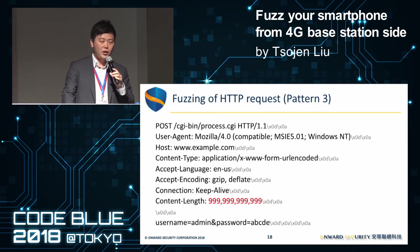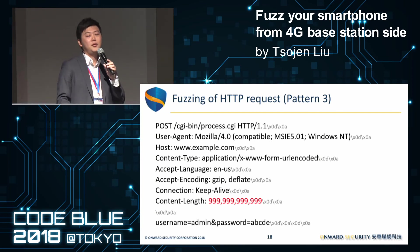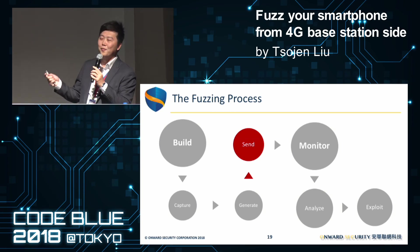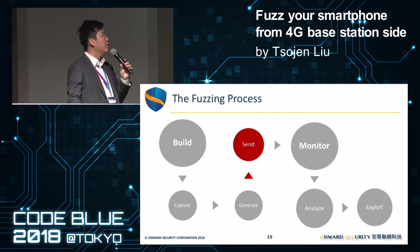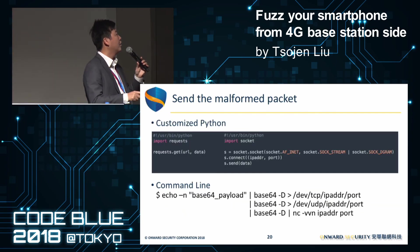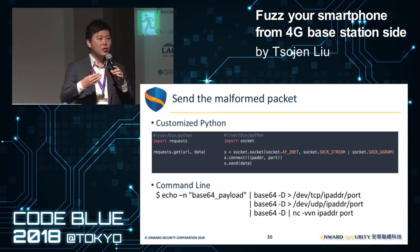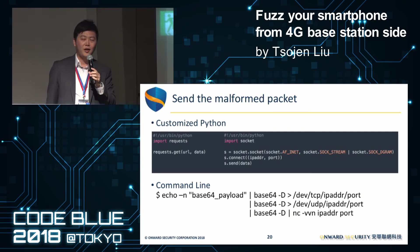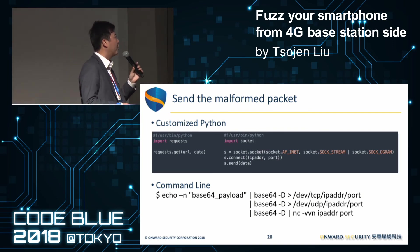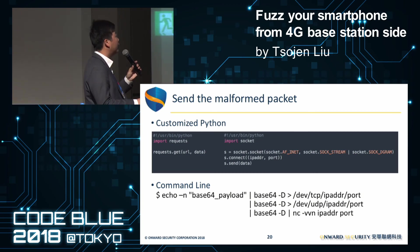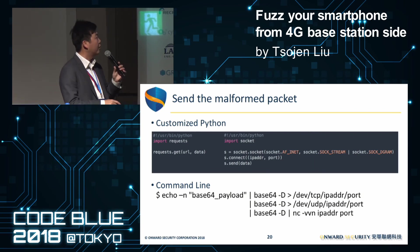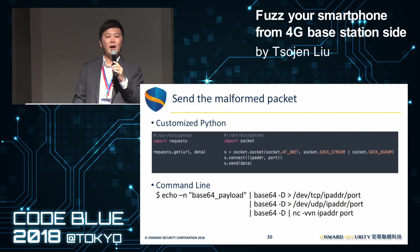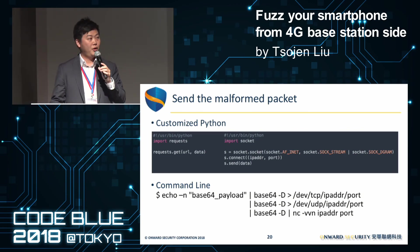Even if we generate one million, ten million, or more fuzzing data samples, the next step is to send this data to our target. Sending data is the easiest part of the fuzzing process. You just need to write a Python script using requests or sockets to send the generated data. You can save data to a file, read it with your Python script, and send it to the target while checking the response. Or you can use the command line — base64-encode your payload and send it in one command.